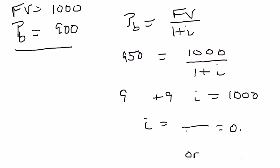So if you're willing to pay up to $950 to get $1,000 a year from now, then this will be $950 plus $950 i equals $1,000. Well, $1,000 minus $950 is now going to be $50. And then when we divide through by $950, we're going to have $50 over $950. And when we do this, this is going to be 0.053, or 5.3%.